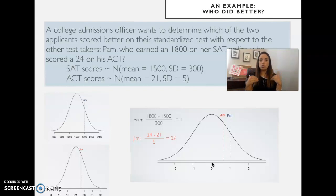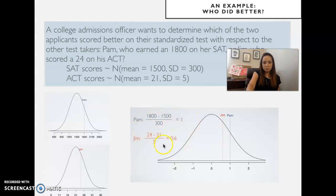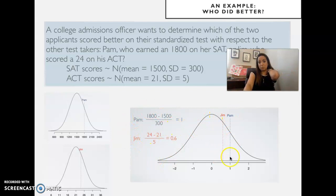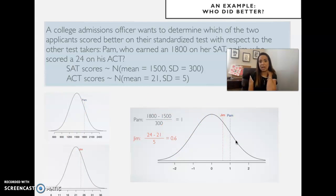The standardized distribution, also called the z-distribution, is a normal distribution with a mean of 0 and a standard deviation of 1. By standardizing scores using the z-score formula, I can put things in context and compare without needing two separate distributions, because all scores reflect how many standard deviations above the mean I am.